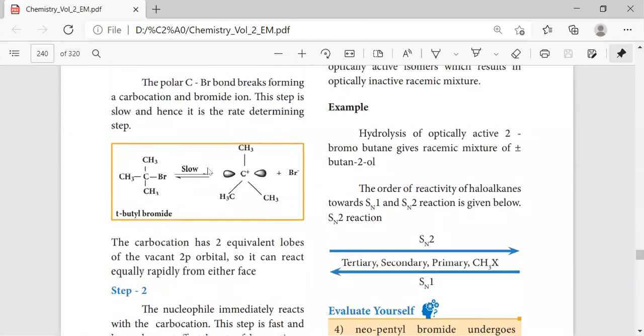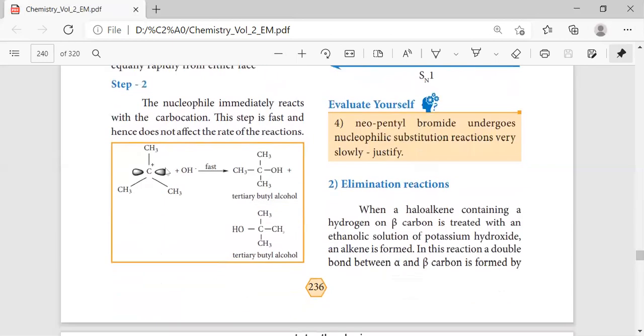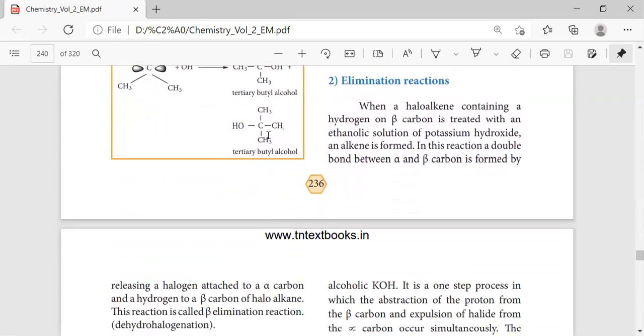Here you see tertiary butyl bromide. This is a slow step process - it forms a cationic intermediate and the bromine leaves as Br minus. Then OH minus attaches to form the OH group attached to this carbon. Now we have tertiary butyl alcohol.